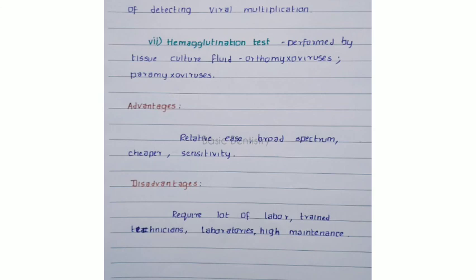These are the three techniques used for the cultivation of viruses: the first is animal inoculation, the second is the chick embryo technique, and the third is the tissue culture method.